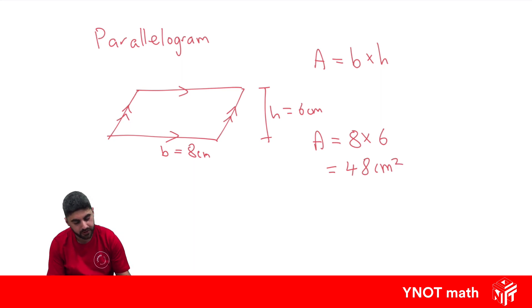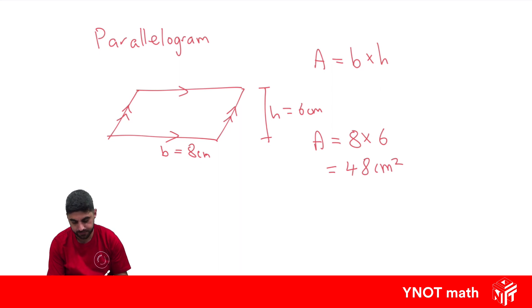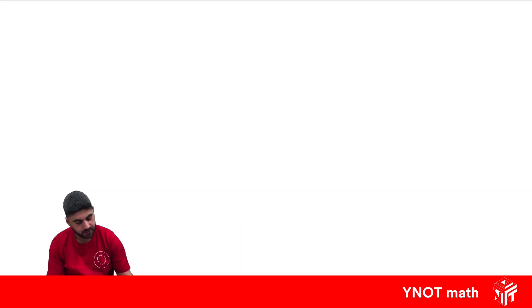It's important that the slanted side is not the height — we need to know the height straight up from the base to the top of the parallelogram. Our next quadrilateral is a rhombus.